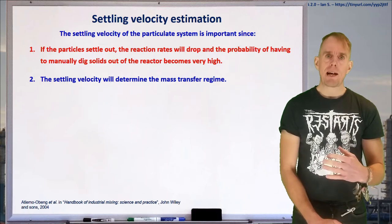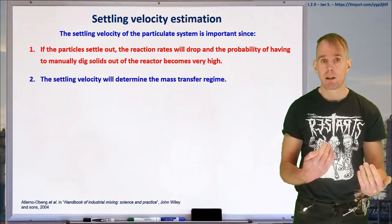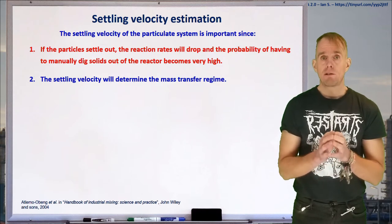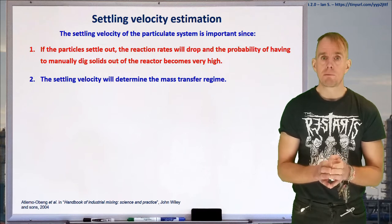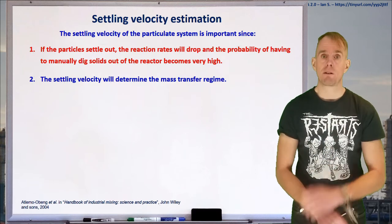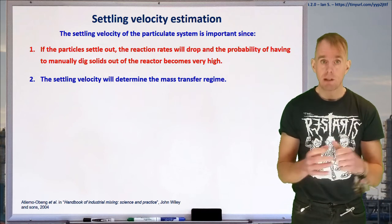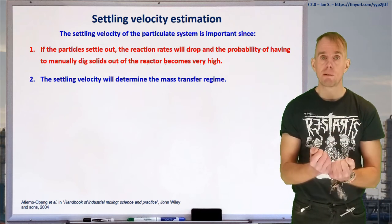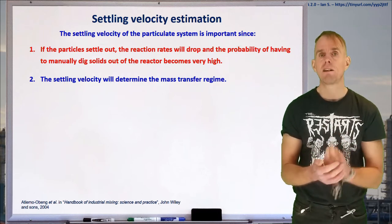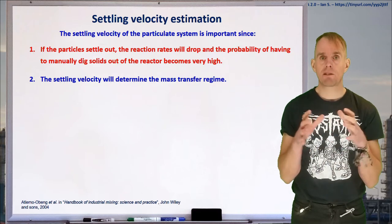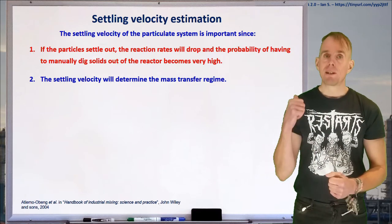If we compare how particles settle to how bubbles rise, we'll see something very, very similar. If we think back to a single bubble rising in an infinite liquid, we found through the Wallace correlation that we can estimate that rise velocity. We then, for the bubble system, estimated the rise velocity of a swarm of bubbles by taking that single bubble rise velocity and using it in the Richardson and Zaki correlation, which allowed us to calculate the rise velocity of a bubble swarm. We're going to see something very, very similar here.